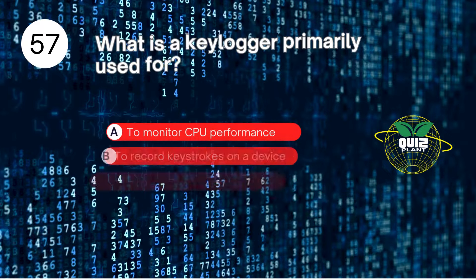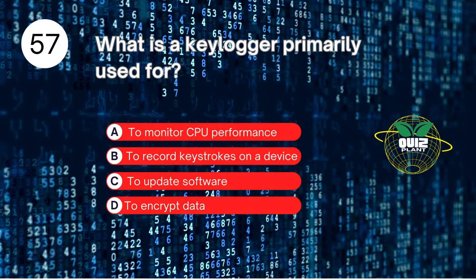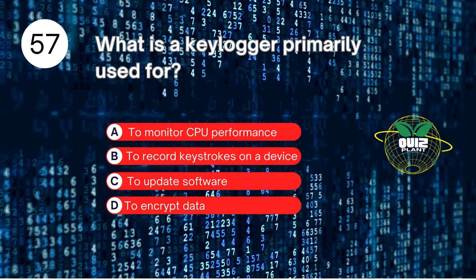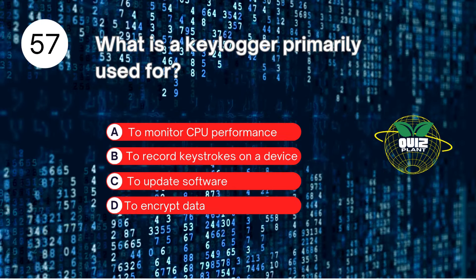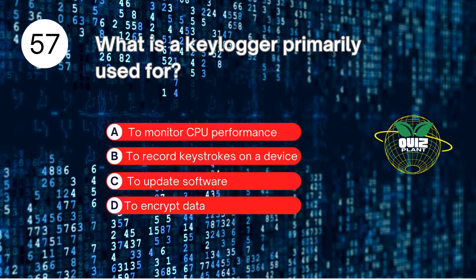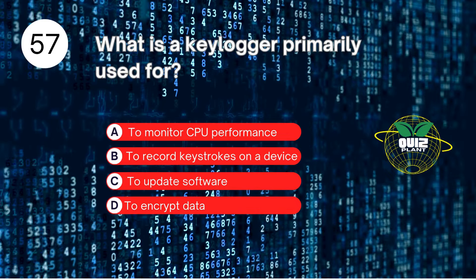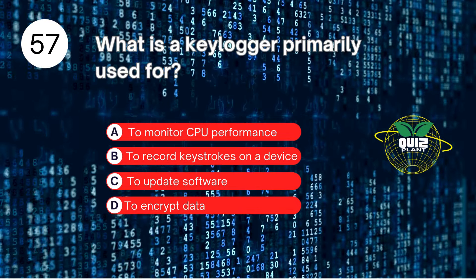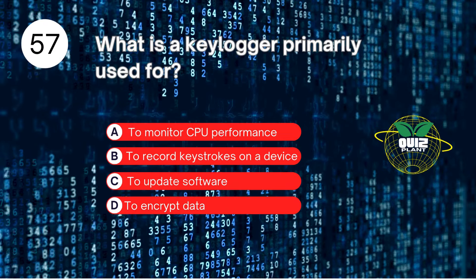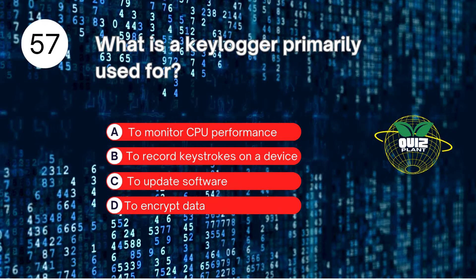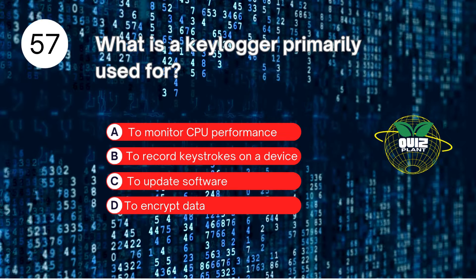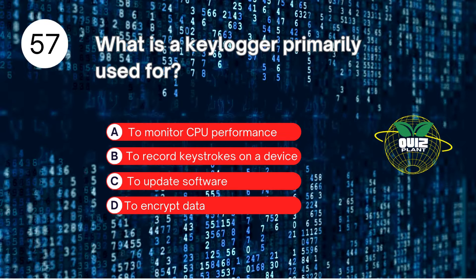Number 57. What is a keylogger primarily used for? A. To monitor CPU performance. B. To record keystrokes on a device. C. To update software. D. To encrypt data. The answer is B. To record keystrokes on a device.